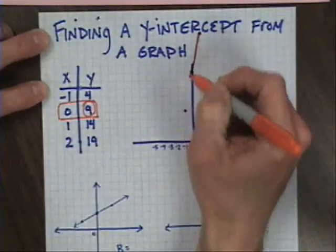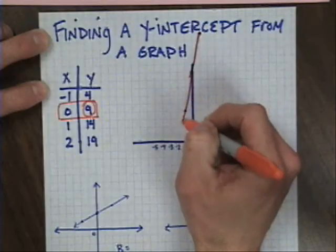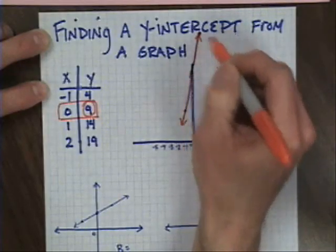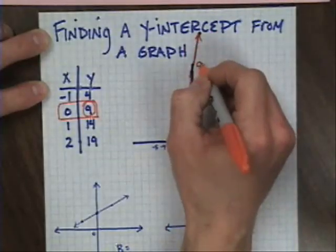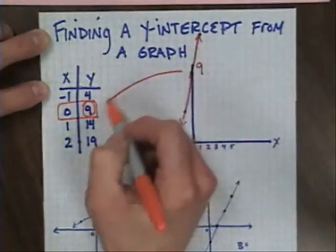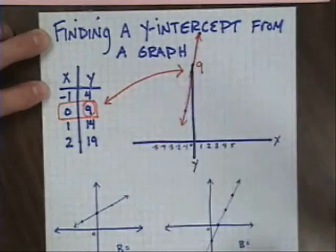If I come down through here and draw the best straight line I can manage, what I would notice is that my orange line touches my y-axis at 0, 9, which is the same as what my table of values tells me.